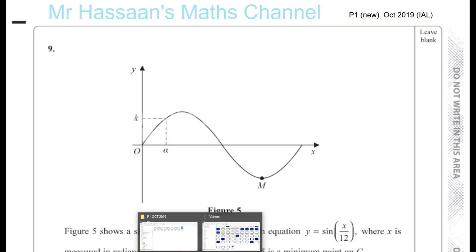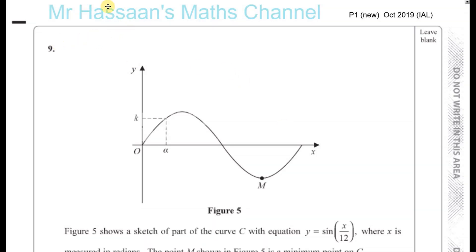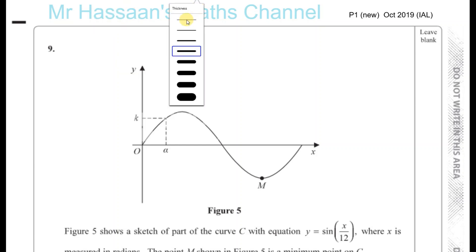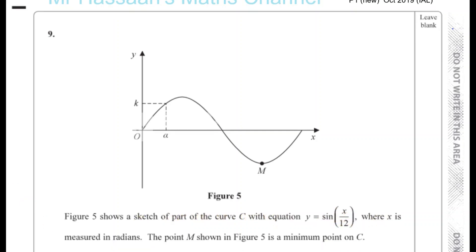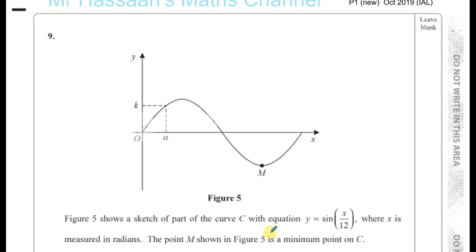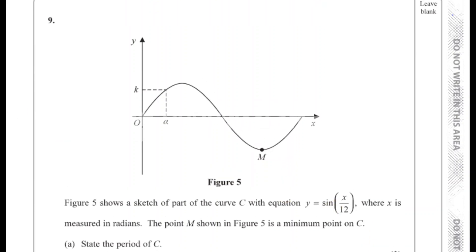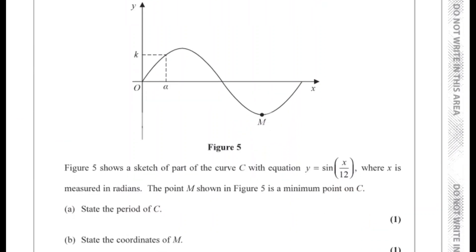Now for question number 9 from the October 2019 International A-Level P1 paper. We have a question about the sine curve. Figure 5 shows the sketch of a part of the curve C with equation y equals sine of x over 12, where x is measured in radians. The point M shown in figure 5 is the minimum point on C. We have to state the period of C and state the coordinates of M.